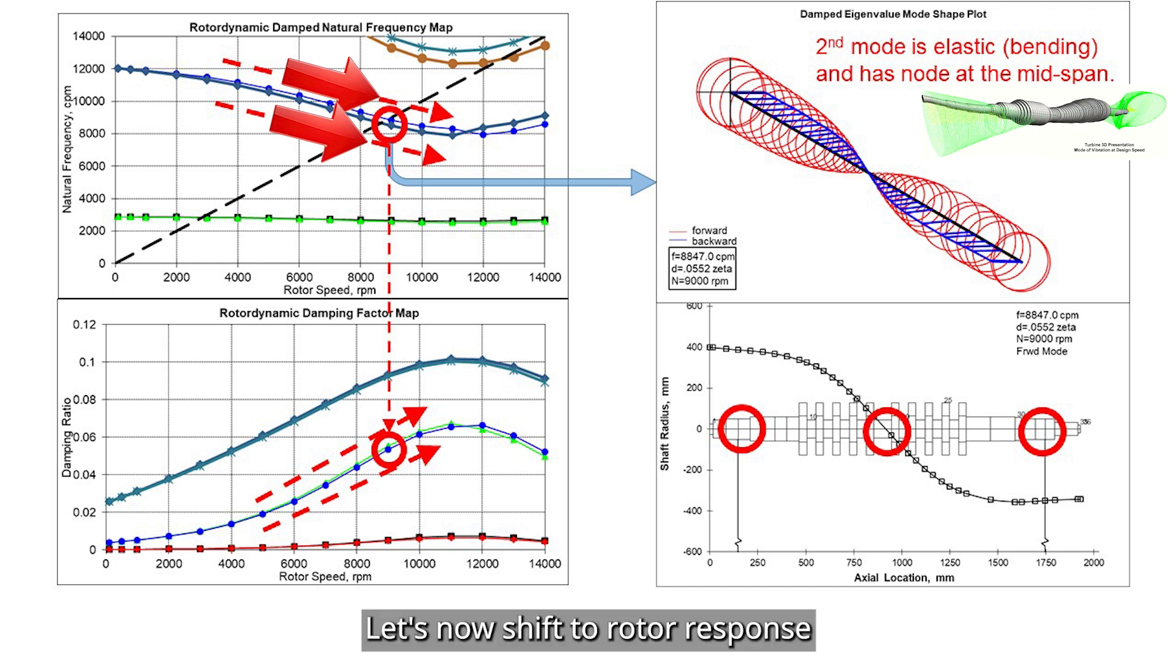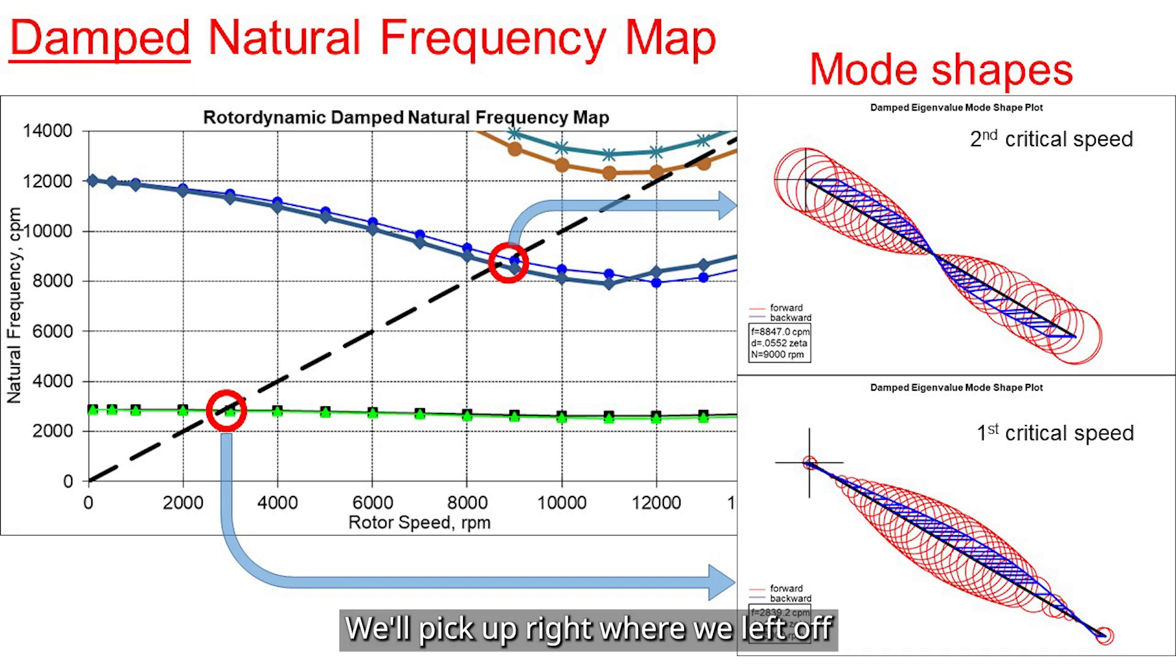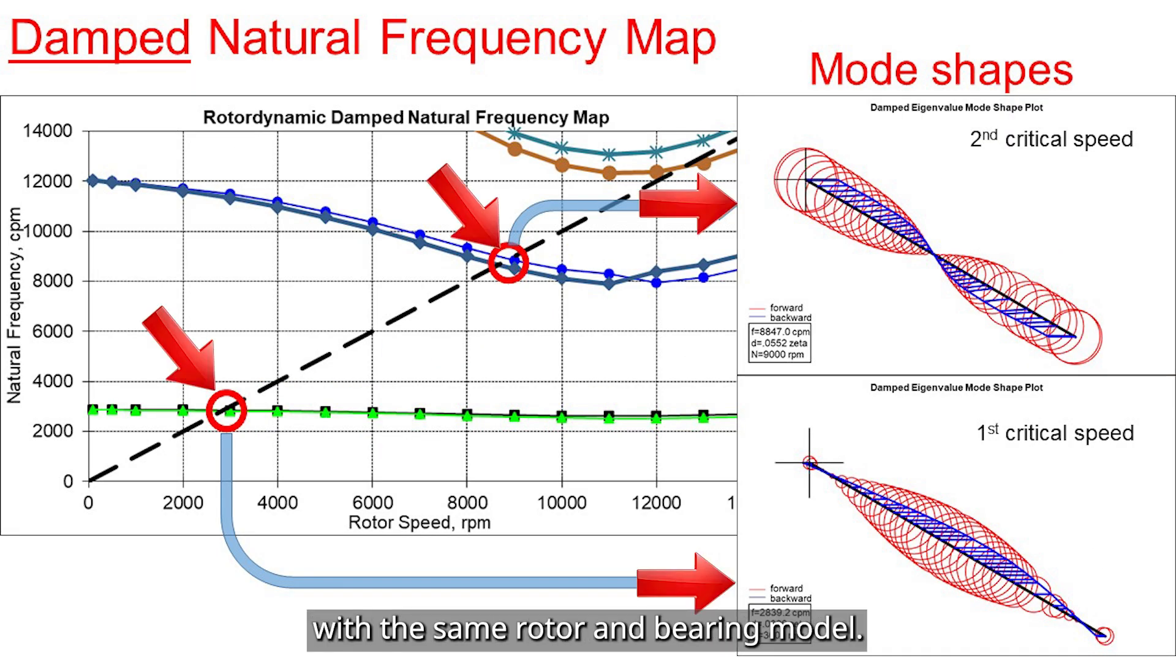Let's now shift to rotor response and mode shapes. We'll pick up right where we left off with the same rotor and bearing model. Now, to understand how the rotor actually moves, the first step is to look at the mode shapes at each critical speed. The critical speed is when the rotor speed lines up with one of the natural frequencies.